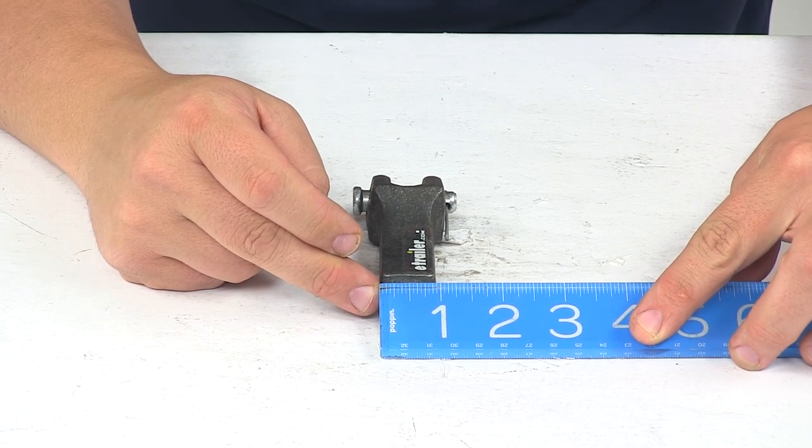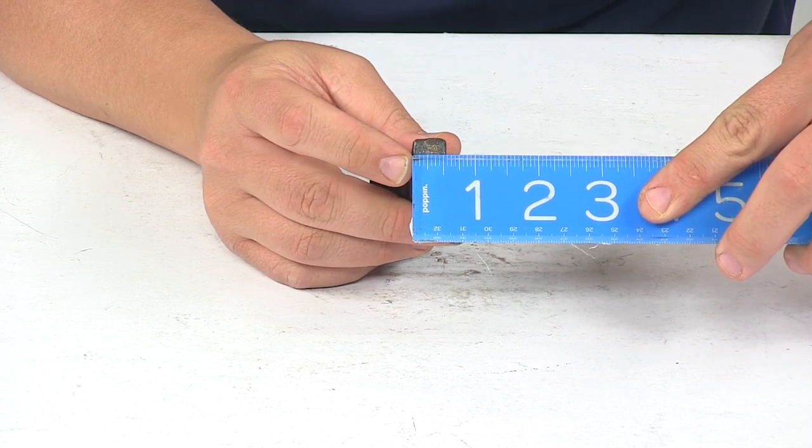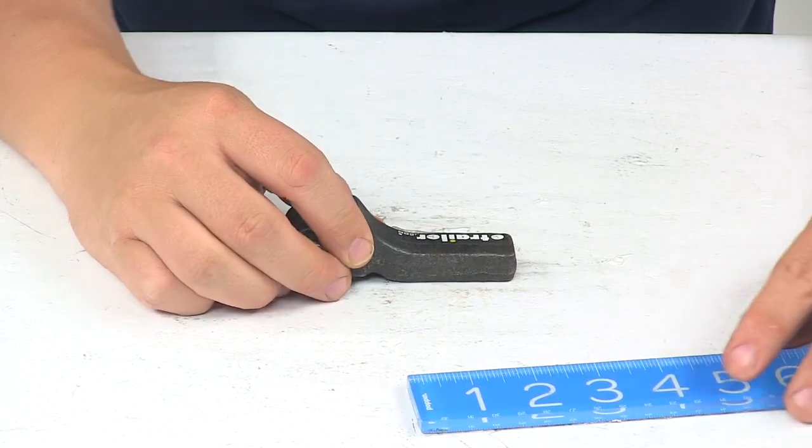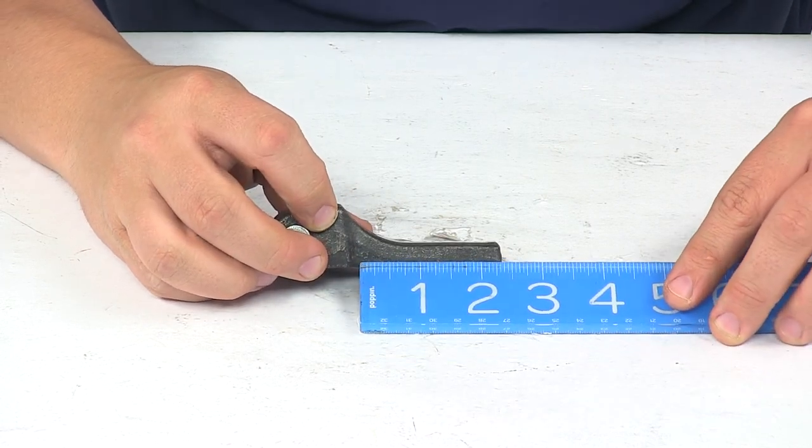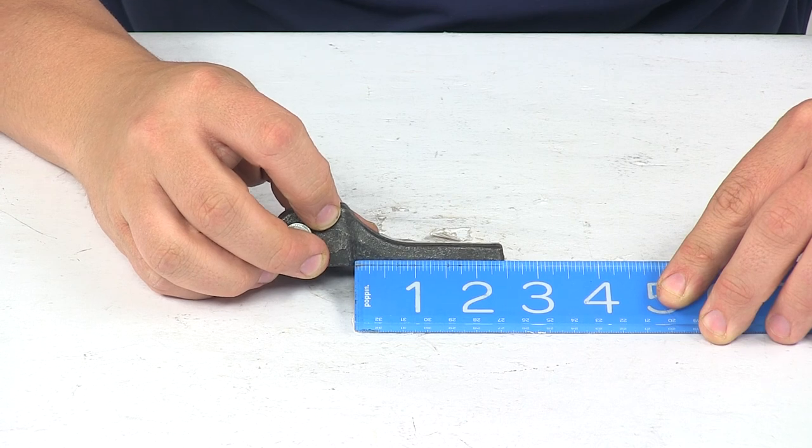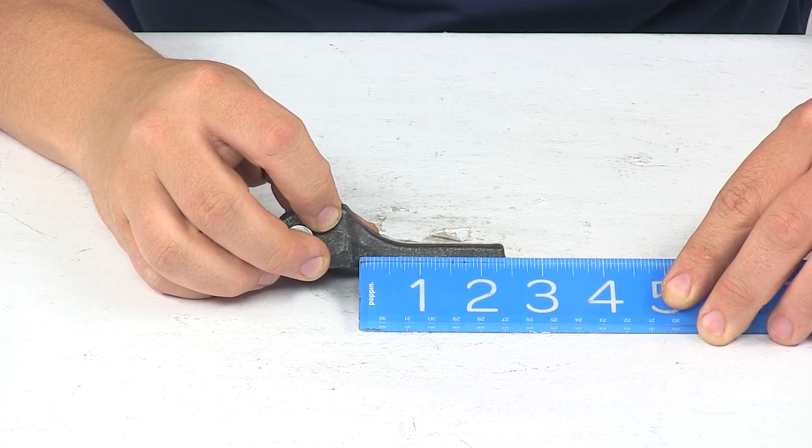This has an overall width measurement of about 7/8 of an inch. Thickness measures about 1/2 inch to 9/16 of an inch. And then the length of that tab portion gives us a measurement of about 2 and 3/8 inches long.